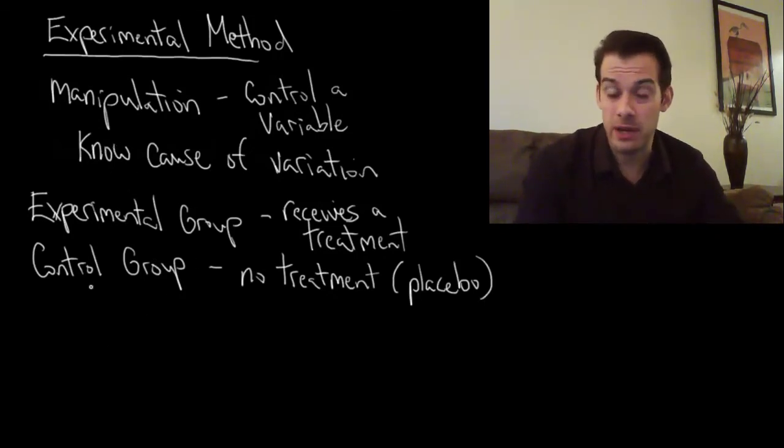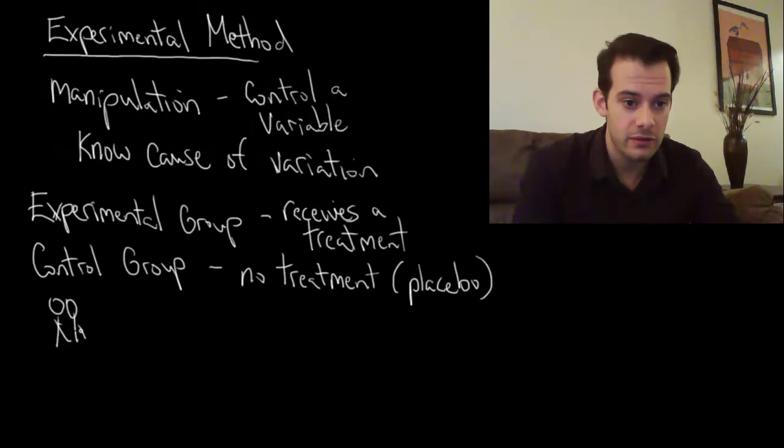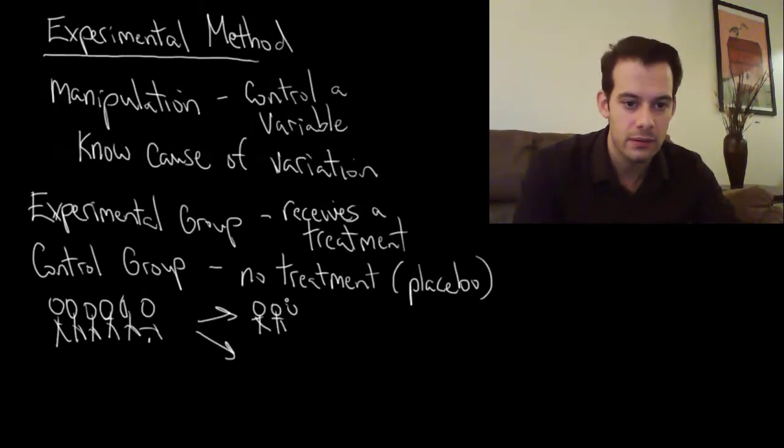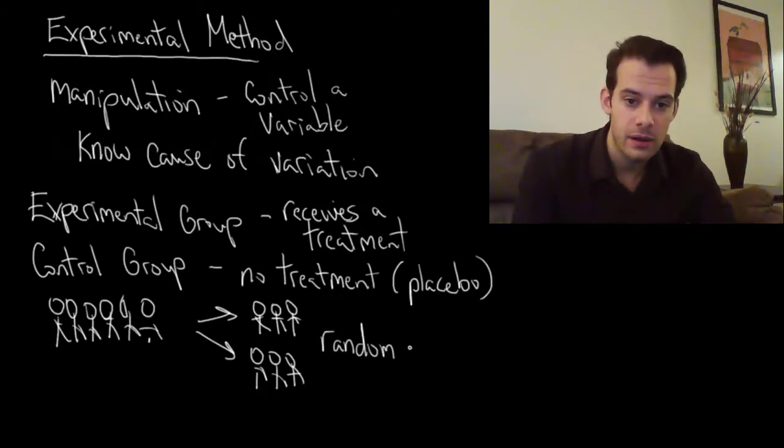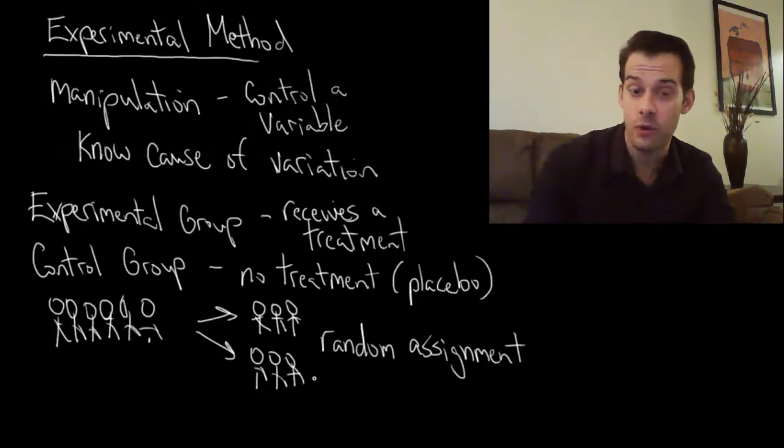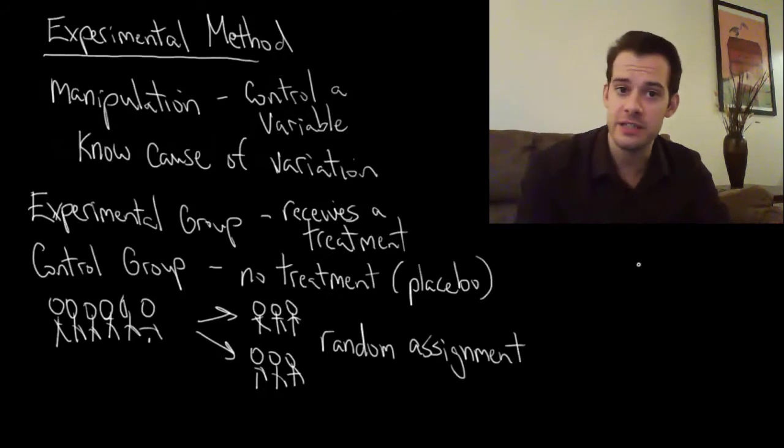How do we decide how we split our participants up into these groups? We have a bunch of participants and we're going to split them up into an experimental group and a control group. The question is how do we decide? The answer is we don't decide. It's not really a decision; we have to use random chance. We assign our participants using random assignment or random allocation. This is how we allocate or assign participants to the experimental group or control group. There are certain things we want to avoid.